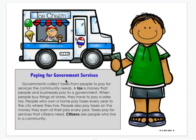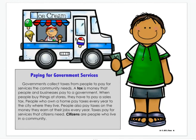Paying for government services. Governments collect taxes from people to pay for services the community needs. A tax is money that people and businesses pay to the government. When people buy things at stores, they have to pay a sales tax. People who own a home pay taxes every year to the city where they live. People also pay taxes on the money they earn at their jobs each year. For example, when you buy ice cream, you do pay tax on it — a very small amount — but it's money that goes to the government to help keep it running.